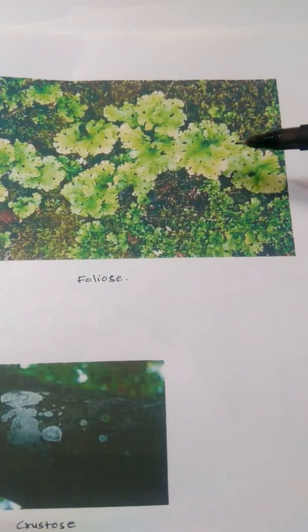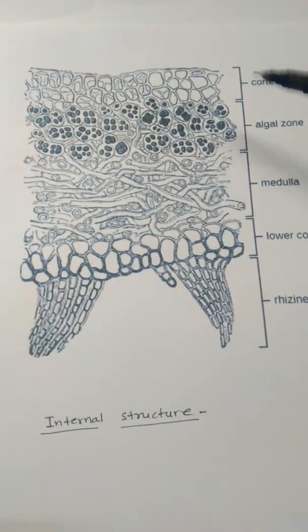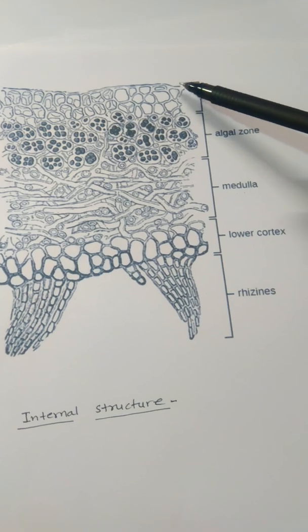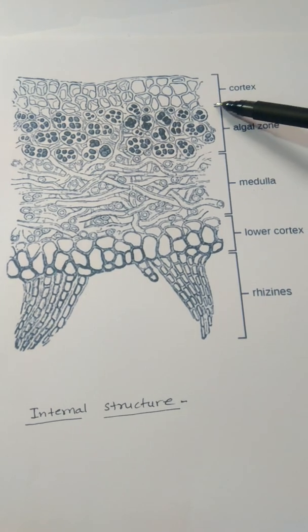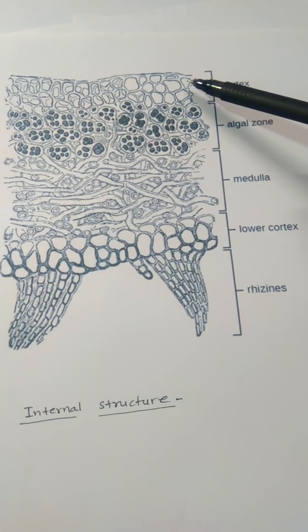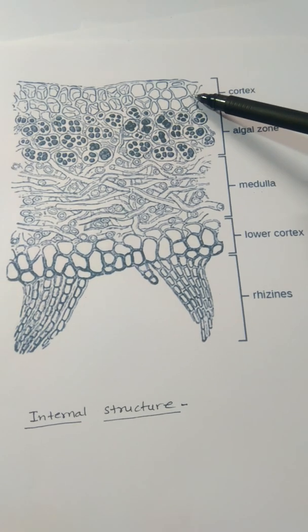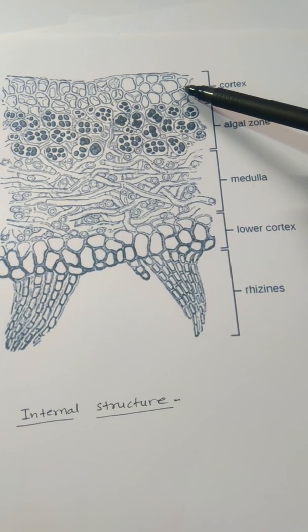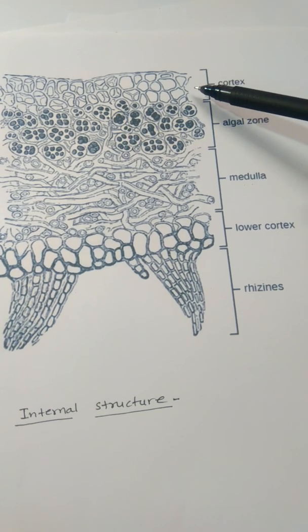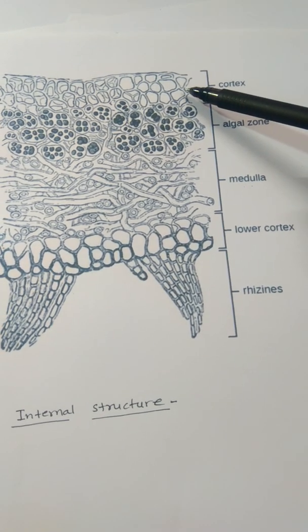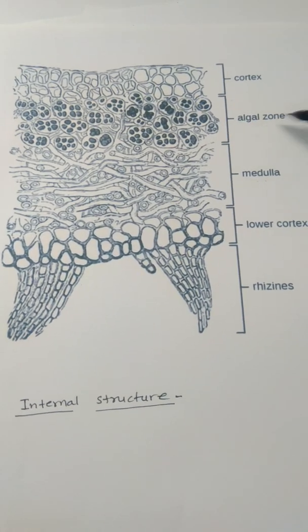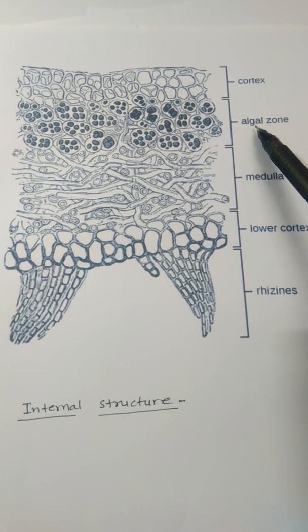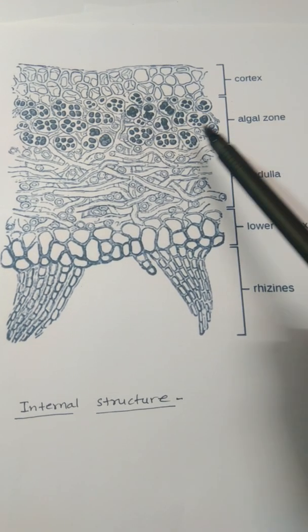When we take a section of this Lichen, we can see its internal structure. The upper part, towards the atmosphere, is made from the cortex — formed by the fungal partners, very closely arranged with little or no gap between cells. Below the cortex region is the algal zone, where the position of the algal partner is fixed and the algal cells are present.